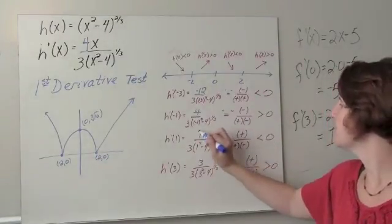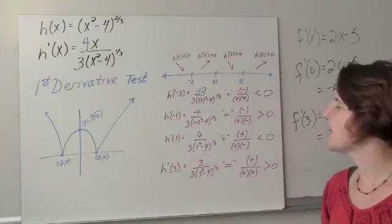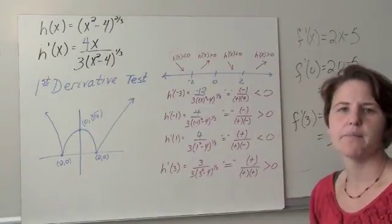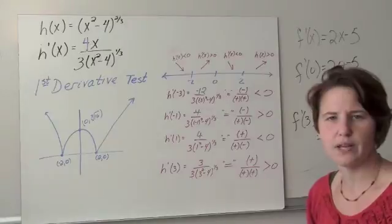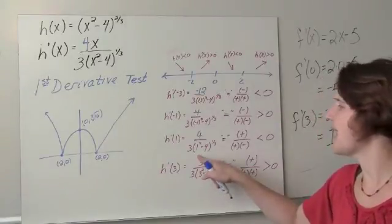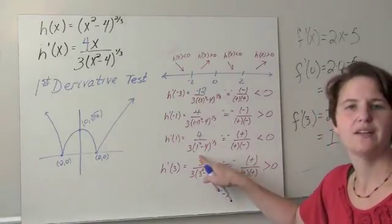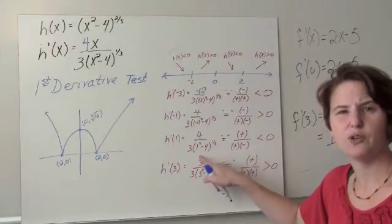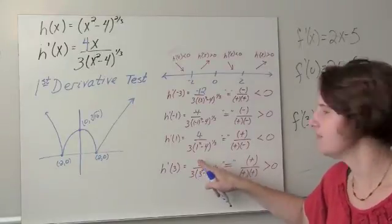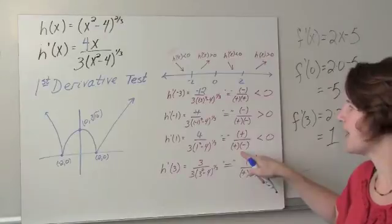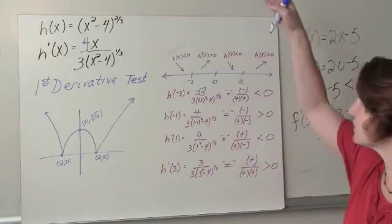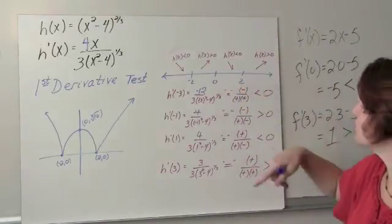If I plug in positive 1, my numerator is positive 4. My denominator has a positive 3 as a factor. And then I'm going to have 1 squared minus 3, which is negative. When I take its cube root, it's still negative. So I have a positive divided by a negative, which is negative. So we're decreasing between 0 and 2.